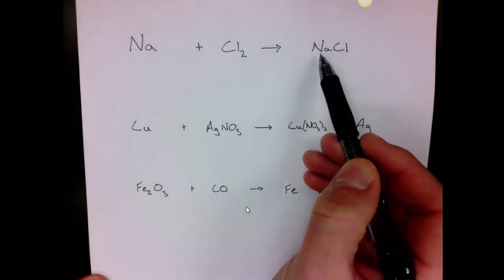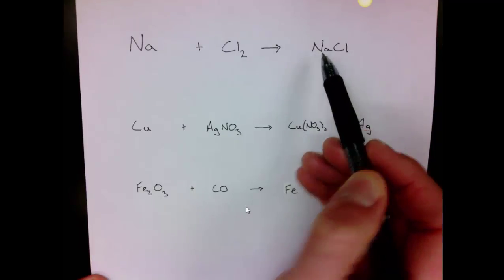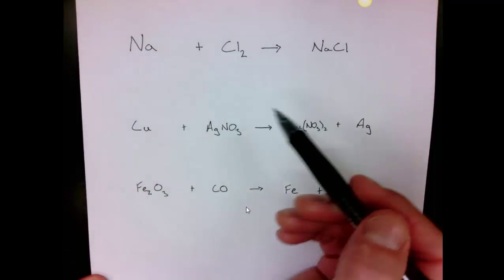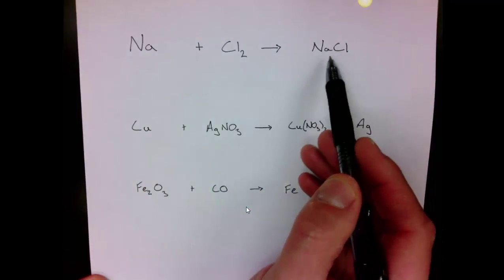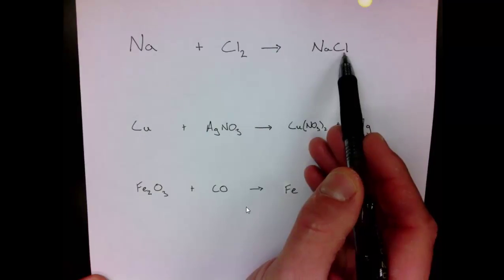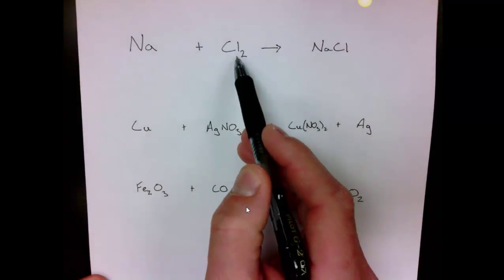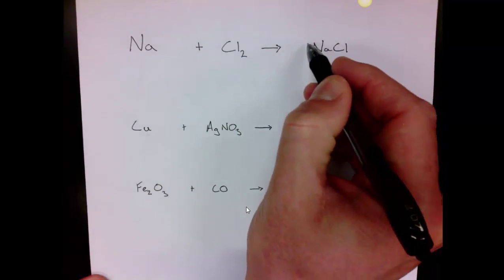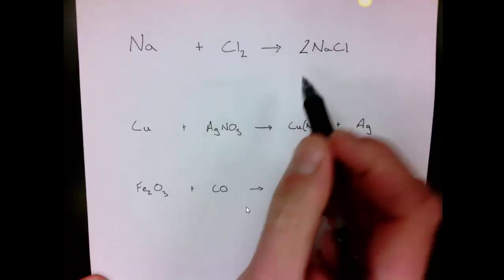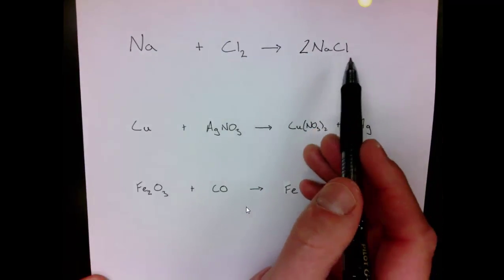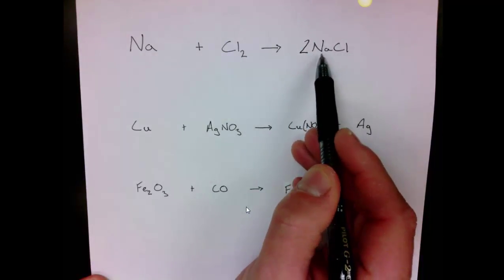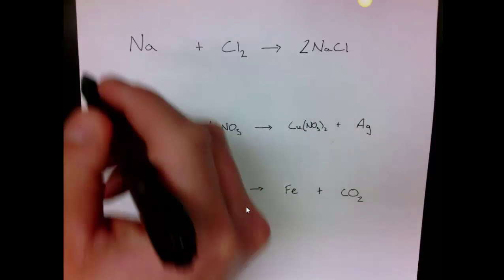If I look at my sodium, I'm going to start on the left of the formula reading left to right. There's one sodium here and there's one sodium here so I don't need to do anything with this. Then my chlorine, there's one chlorine here but there's two chlorines here, so I'll need to go back and add a coefficient 2 in front of my sodium chloride. That 2 though affects sodium, so now I have two sodiums, I need two sodiums over here.